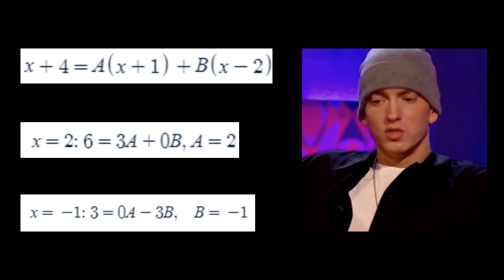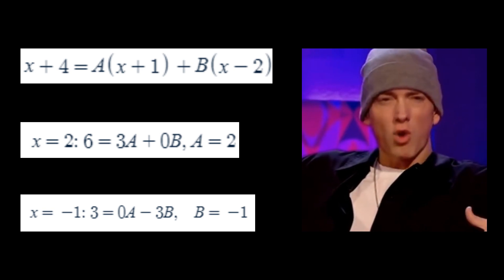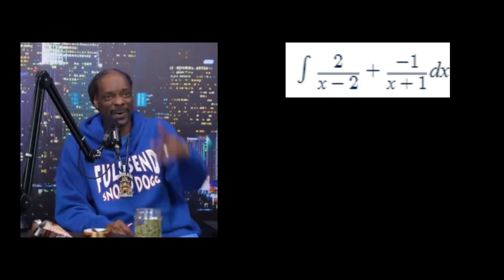Similarly, if we set x to negative 1, we get 3 equals negative 3B, so B is negative 1. Now we have the integral of 2 over x minus 2 minus 1 over x plus 1, dx. Since we are adding two expressions, we can separate these into two integrals like so.